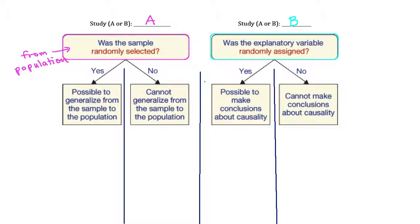When the sample was not randomly selected, there is potential for sample bias — for example, a convenient mall sample only captures people who go to the mall, not the broader population of interest. Only a random sample is truly free of systematic sample bias. When the explanatory variable was not randomly assigned, it allows for a confounding variable to be present.